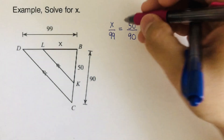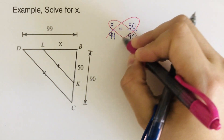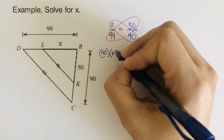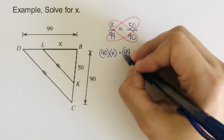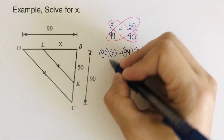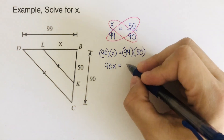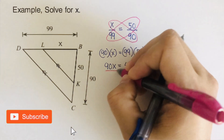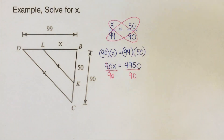From here we're going to cross multiply. So this comes out as 90 times X is equal to 99 times 50. That becomes 90X equals 4,950. Then we divide both sides by 90.